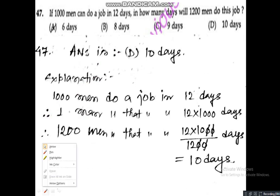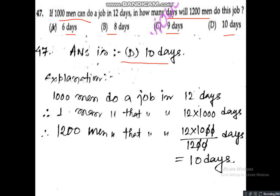Question number 47 is a math question — class 9 standard math. If 1000 men can do a job in 12 days, in how many days will 1200 men do this job? Option A: 6 days, Option B: 8 days, Option C: 9 days, Option D: 10 days. The correct answer is Option D — 10 days.